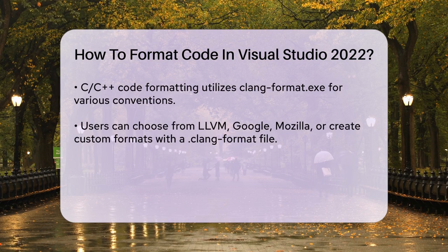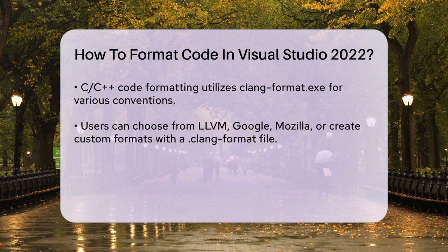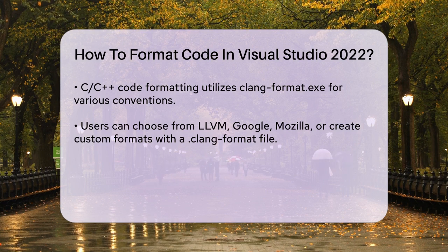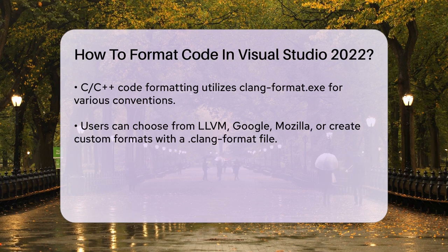Now, let's talk about some quick and easy ways to format your code. You can use the hotkeys Ctrl+K, Ctrl+D to format the entire document, or Ctrl+K, Ctrl+F to format just the selected part of your code. These options are found under the Edit menu in the Advanced section.